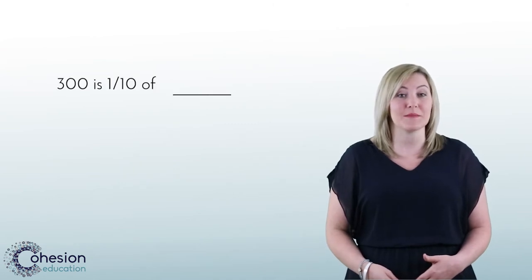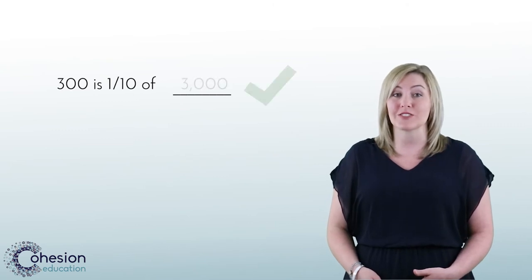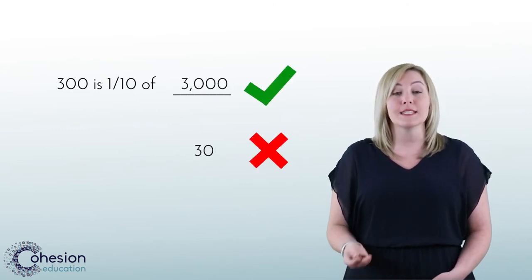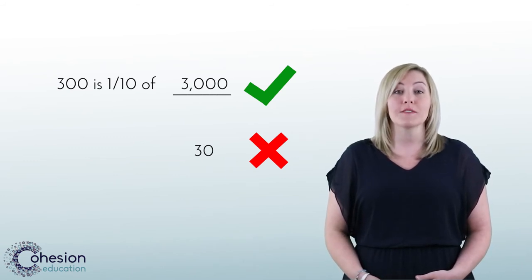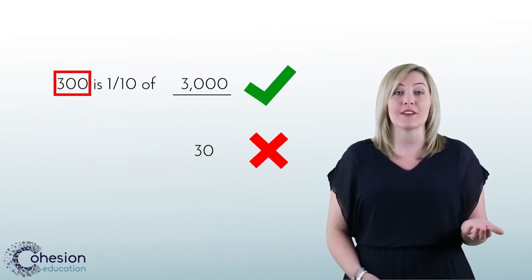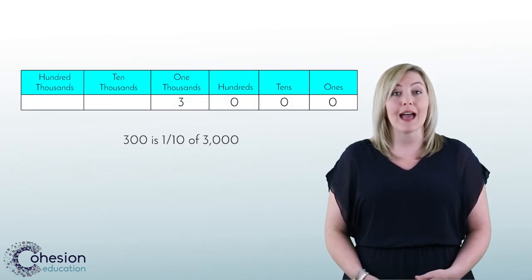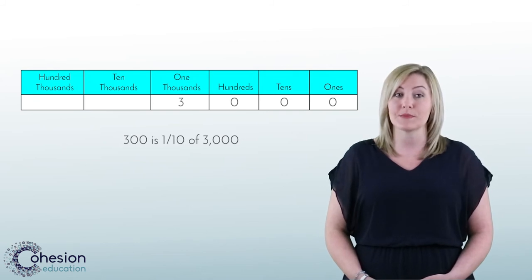A very common error that occurs when solving these types of problems is related to the sentence being misread or misunderstood. Looking back at this problem, we know the answer is three thousand, but many students will answer thirty. The misconception here is not reading carefully — students will often pull out the two numbers, three hundred and one tenth, and go from there. To address this problem, have students use the place value chart to justify or prove their answer.